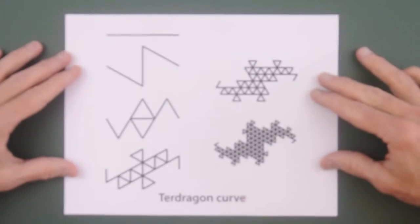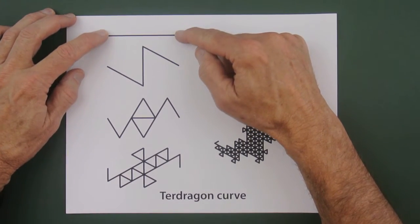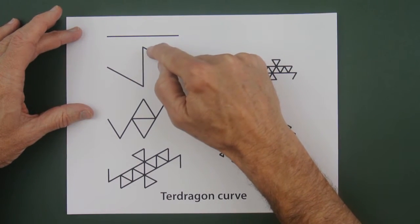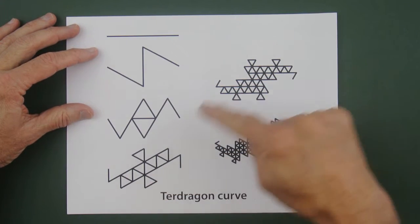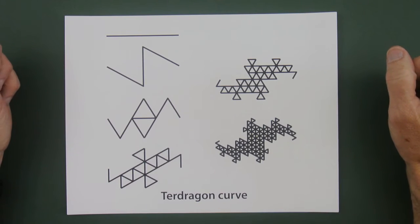Finally I'm going to fold the Turdragon curve. In this case, as in the arrowhead curve, you have three segments. But they're not folded the same way. And the angles are 60 degrees. So if we iterate, it starts to look kind of dragon-y. So again, it's another type of dragon curve.